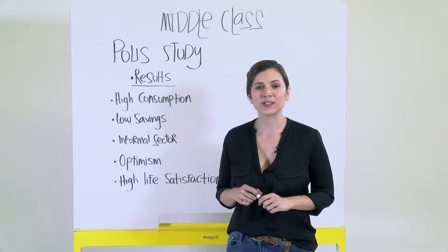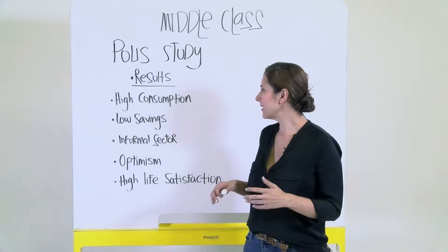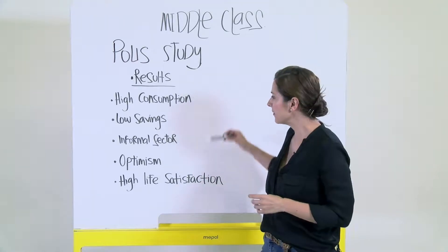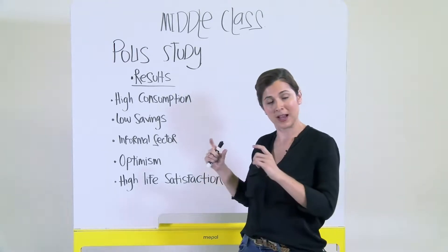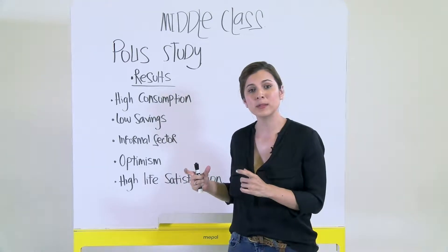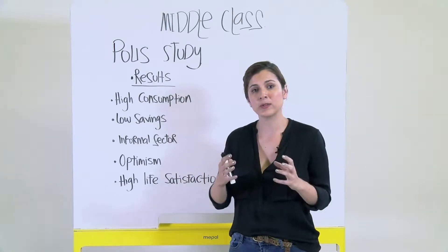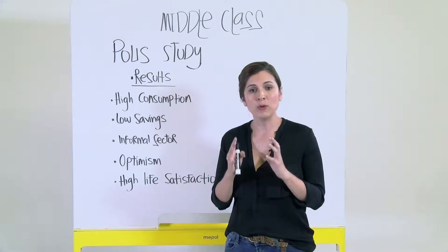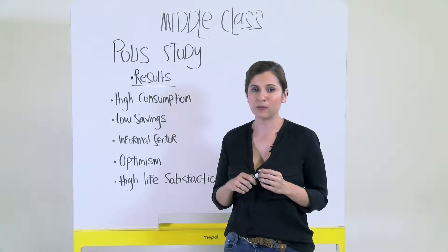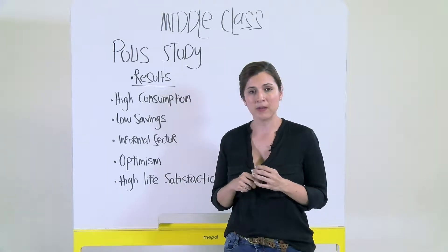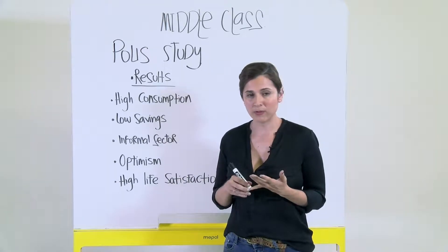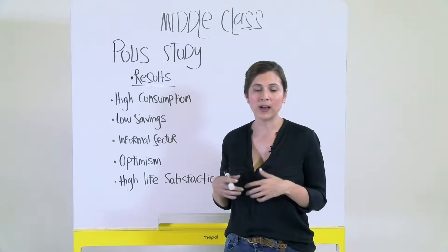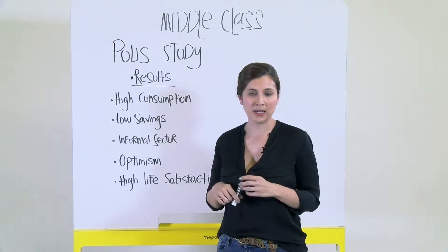Let's now turn to the results of the Polis study. There are five points that deserve some discussion. The first one is the high consumption — not only of the middle class but also of people who live in lower income brackets. We found that many people spend a lot of money on things that are not necessary, for instance going out for dinners, spending money on food or going out, or spending money on clothes.